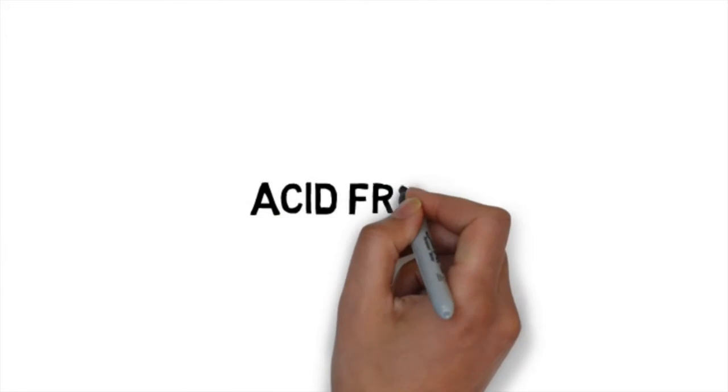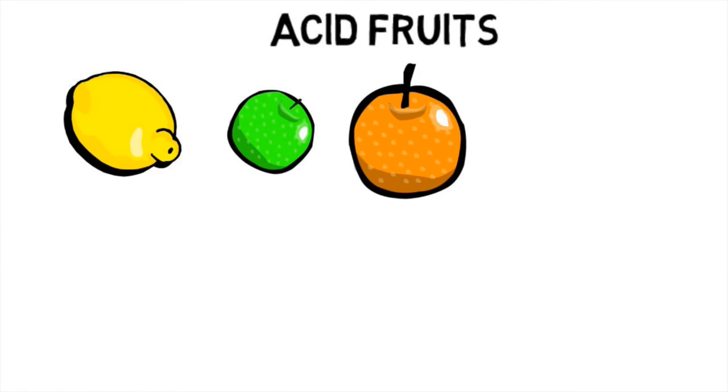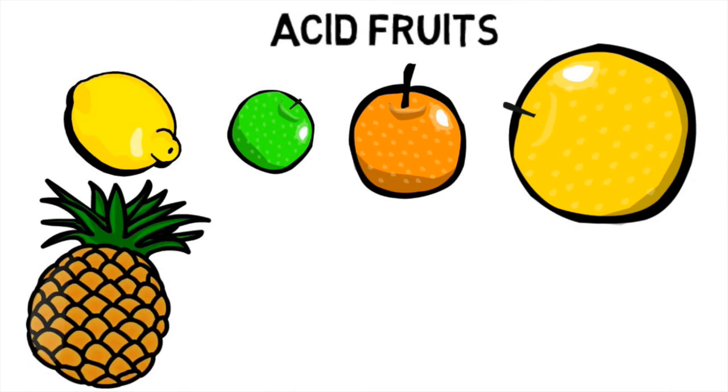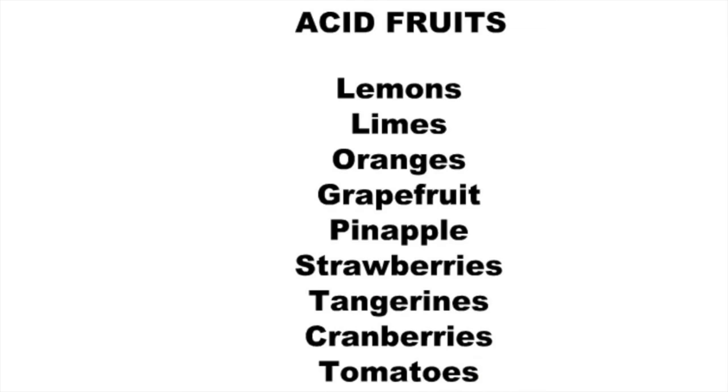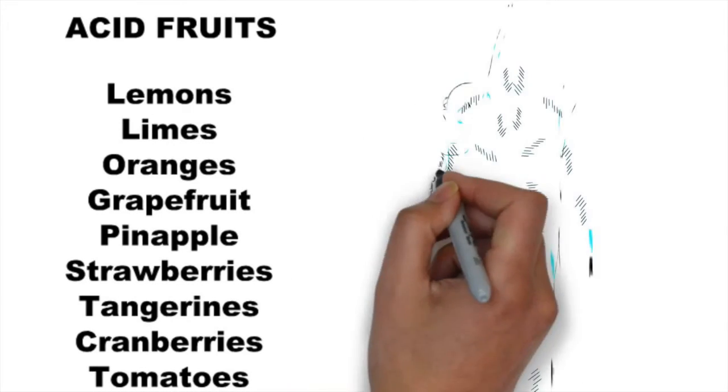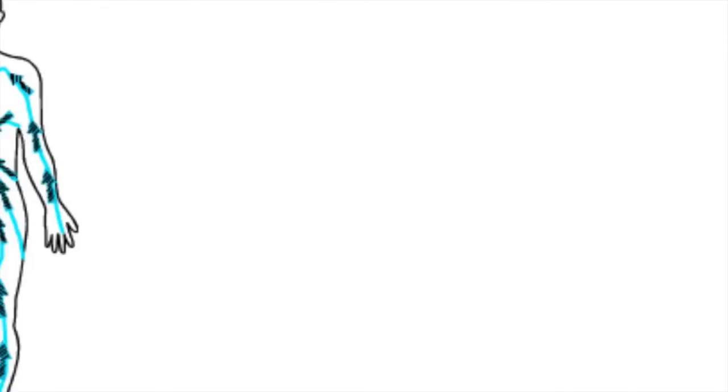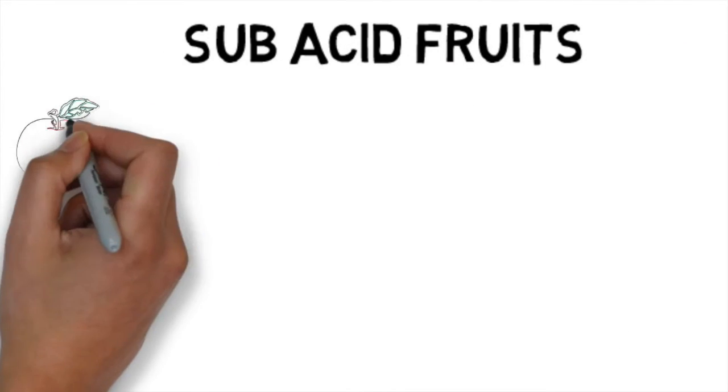Acid fruits are the most alkalizing even though they taste acidic. These include lemons, limes, oranges, grapefruit, pineapples, strawberries, tangerines, cranberries, and tomatoes. They get rid of acids, get lymph moving, and are powerful at pulling toxins out and dissolving clogged lymph fluids. Remember, what you don't eliminate, you accumulate.